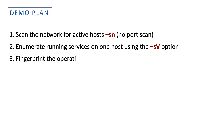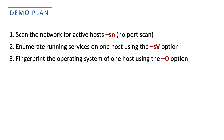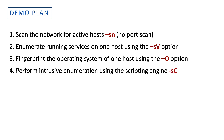Number three: we will fingerprint the operating system of one of the hosts using the -O option. Number four: we will perform a more intrusive enumeration using the default scripting engine in nmap with the -sC option.